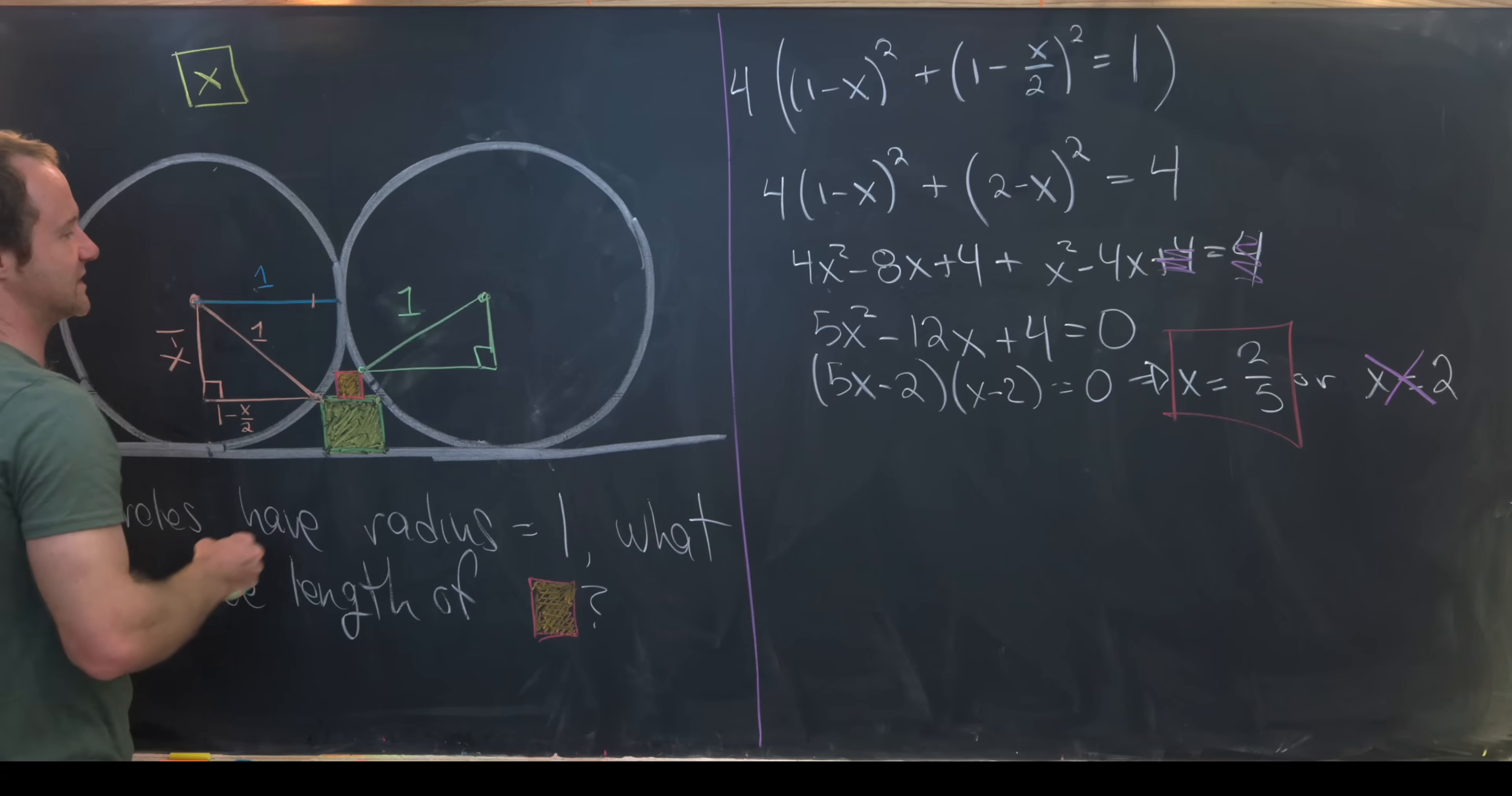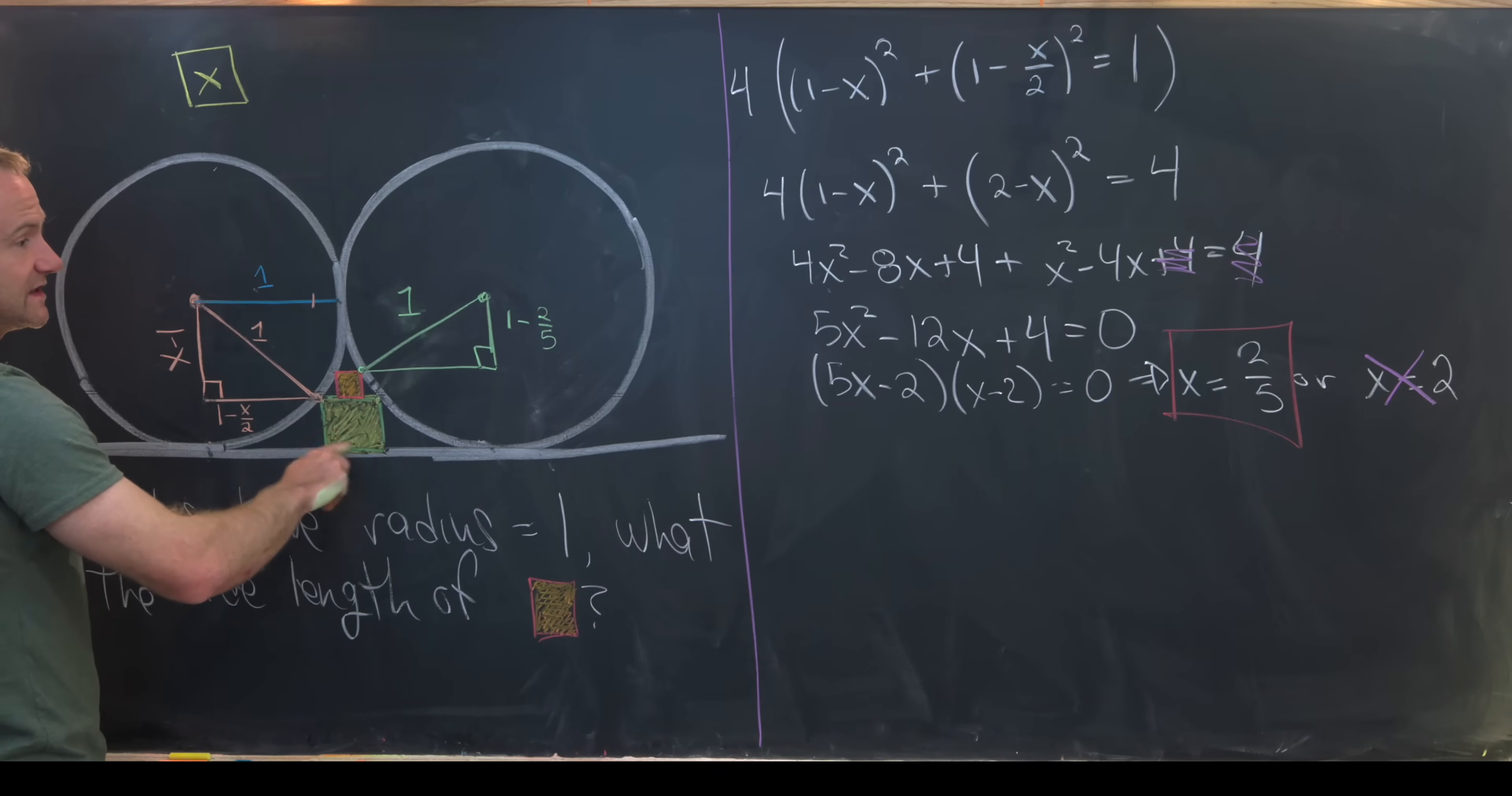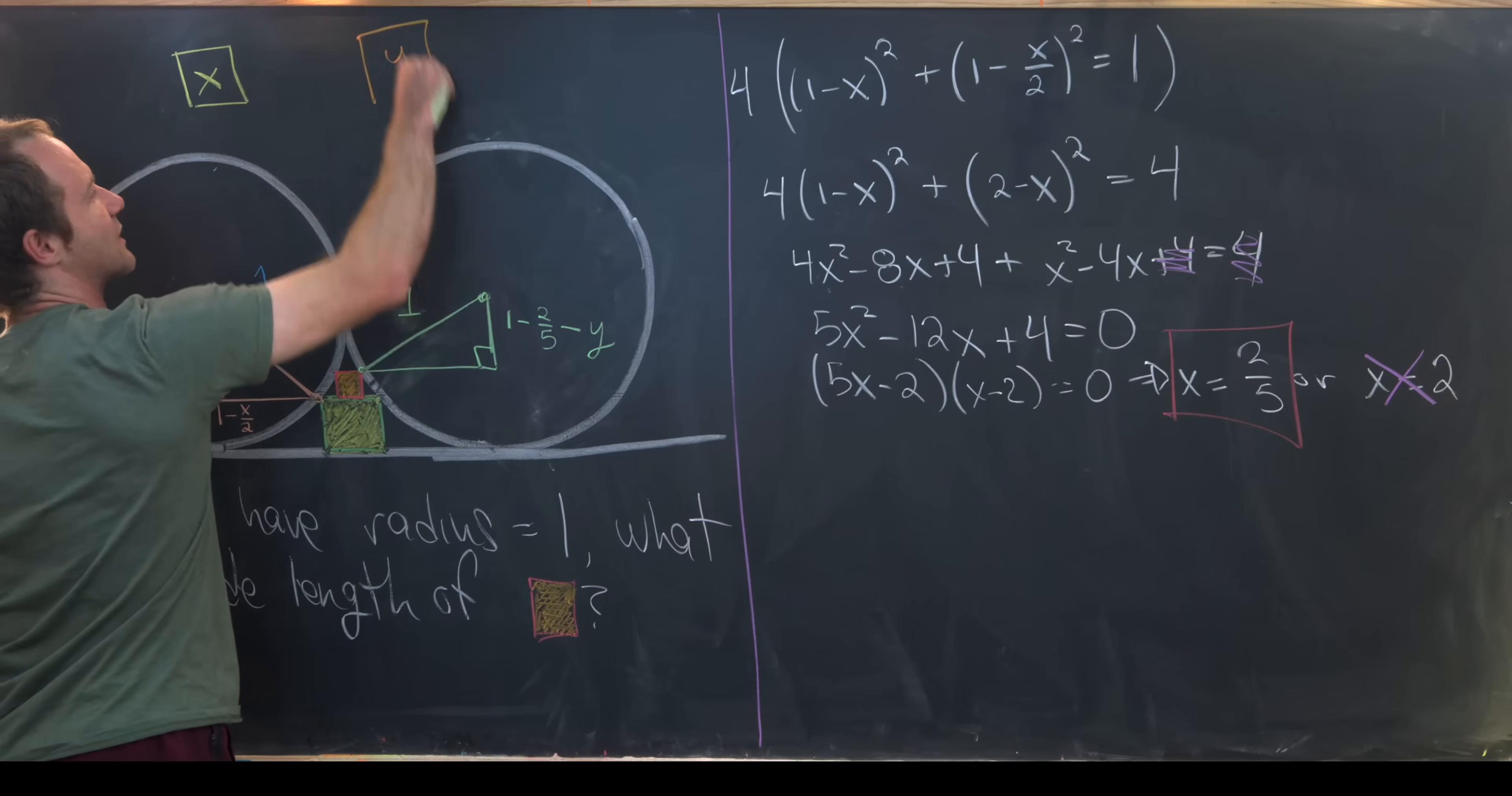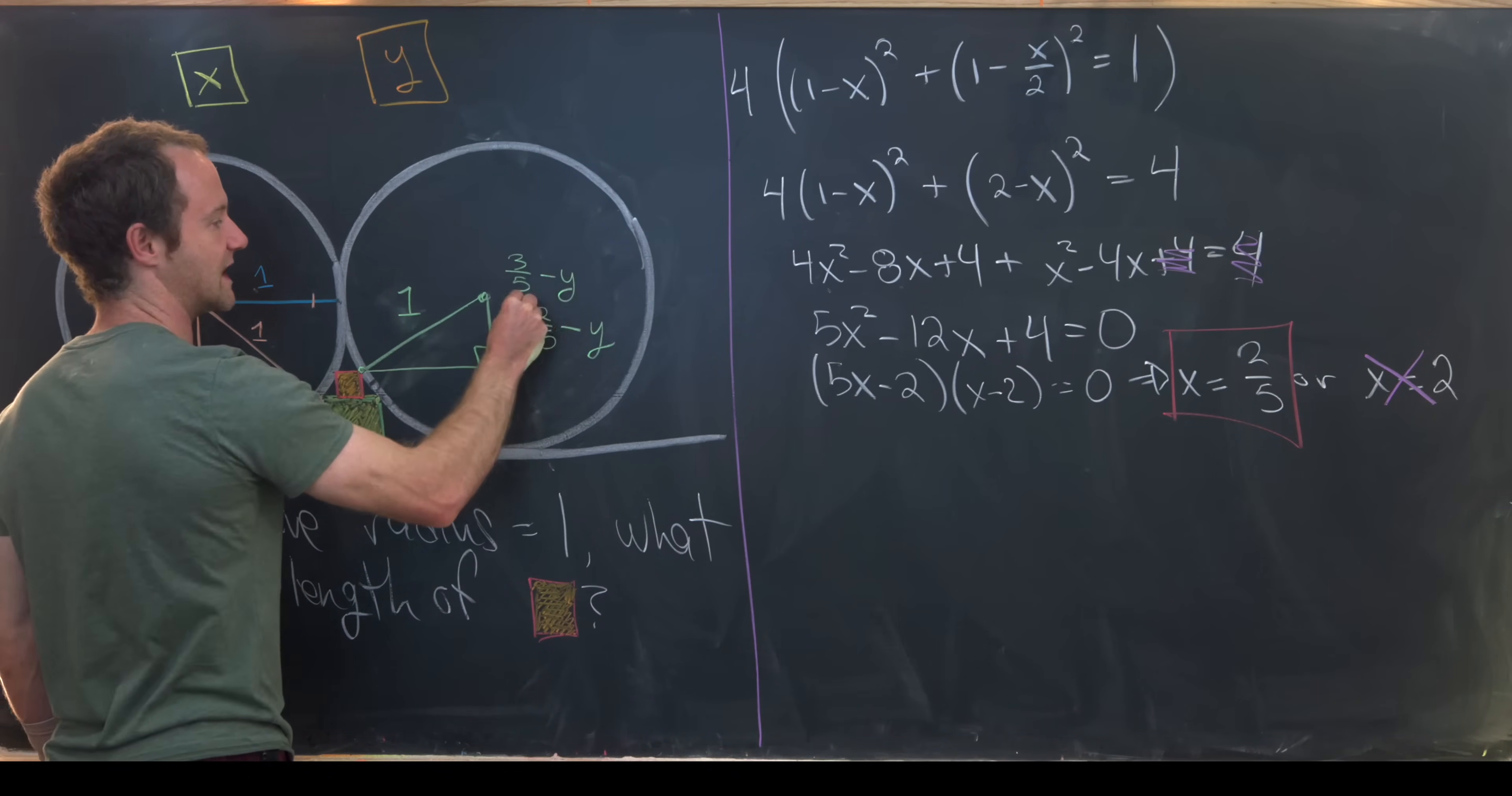Notice the height of this triangle will be 1 minus 2/5. So it's going to be 1 because we start with the entire radius of the circle. Then we need to subtract off this side length that we found for the yellow square, which was 2/5. And now we need to subtract off the side length for this orange square, which I'll call y. So we'll denote that up here by just saying that we have y in the square. That's the side length of this guy right here. That obviously simplifies a little bit. That'll simplify to 3/5 - y.